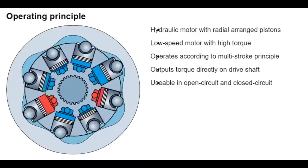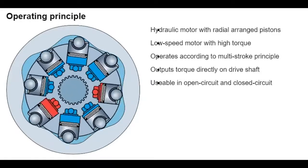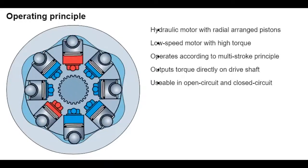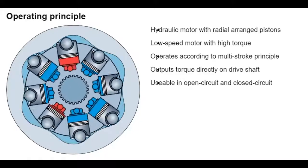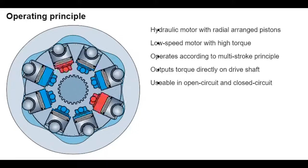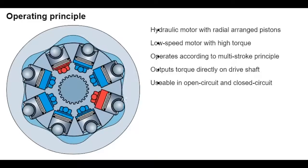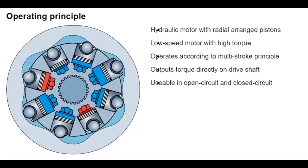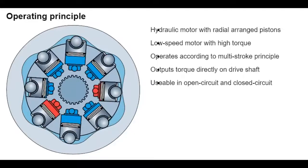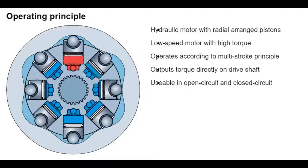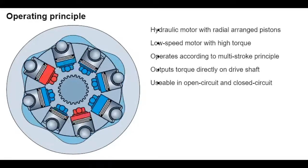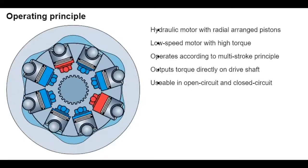Output torque is generated by the force caused by the pressure and the piston area. It grows with the pressure difference between the high-pressure side and the low-pressure side. Output speed depends on displacement and is proportional to the incoming flow. The number of working and return strokes corresponds to the number of times the cam ring is lifted, multiplied by the number of pistons.